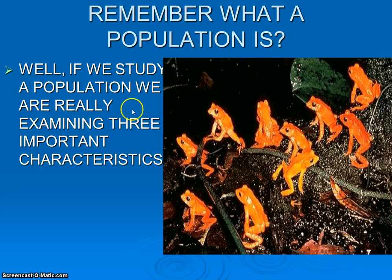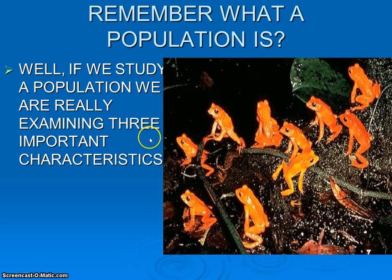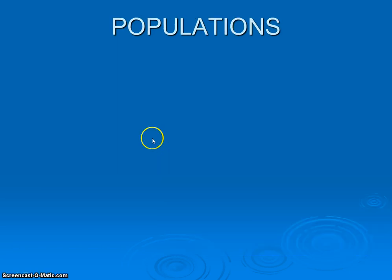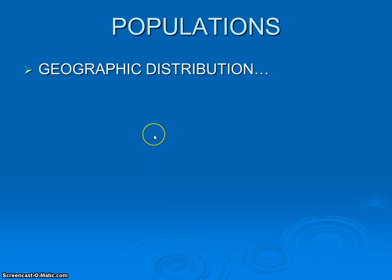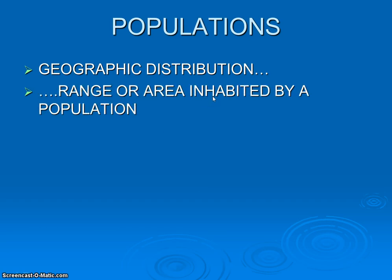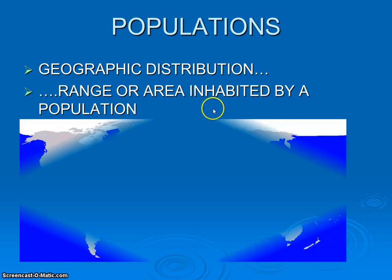As we study populations as ecologists, we're really looking at primarily three main factors. One of the key descriptors is geographic distribution — where do you find them? What's their range? Where do they live?